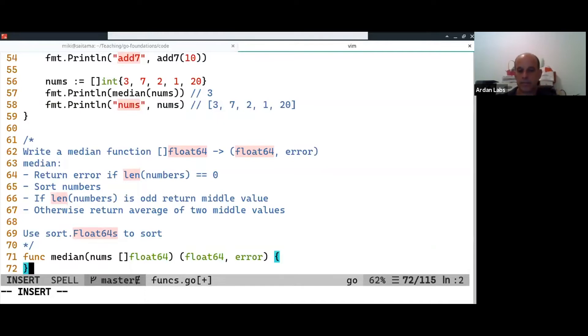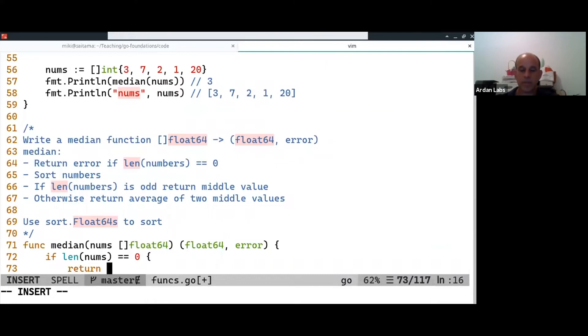And the initial condition is easy, right? So if len of nums equals zero, return, pick a number, nobody really cares.